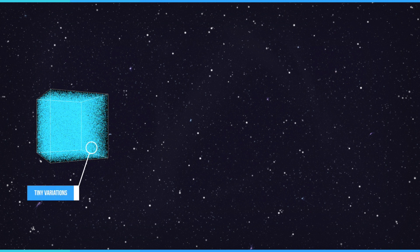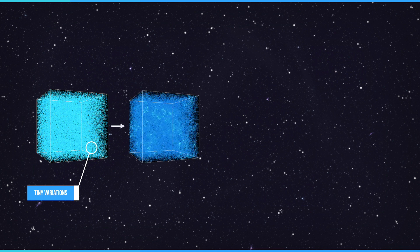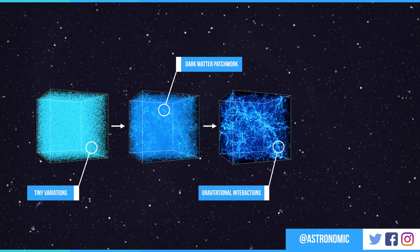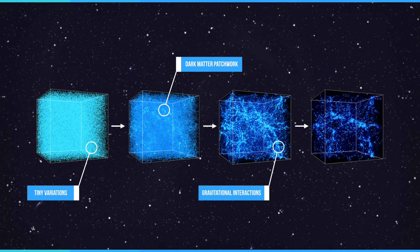Tiny variations in density within the Big Bang imprinted a dark matter patchwork that has been reinforced by billions of years of gravitational interactions. The gas followed the dark matter, creating the galaxies and stars that we know today.